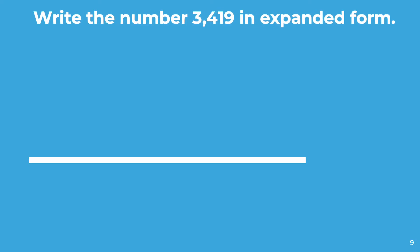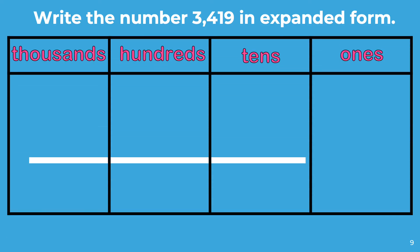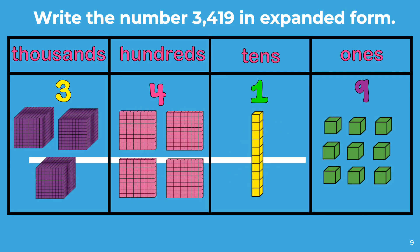Write the number 3,419 in expanded form. To write this number in expanded form, we will place each digit inside a place value chart. Then we will build each of these digits using base 10 blocks. Next, starting from the greatest place value, we will determine the value of the digit by counting the base 10 blocks. Starting with the 3, we will count to see what is the value: 1,000, 2,000, 3,000. 3,000 is the value of the 3. That is our first number in expanded form. Plus,